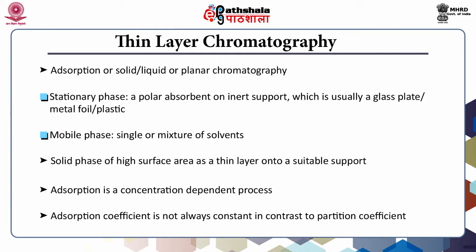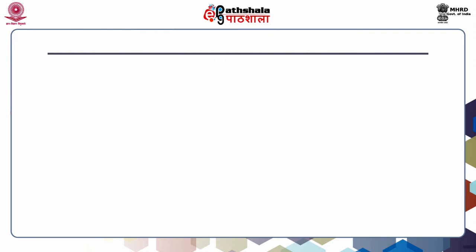Thin layer chromatography is a useful tool for separating and identifying compounds from a mixture. In TLC, there is a liquid mobile phase and a solid adsorbent as the stationary phase. It is called 'thin layer' because a solid phase of high surface area is coated as a thin layer onto a solid support, which is usually a glass plate, a metal foil, or plastic.